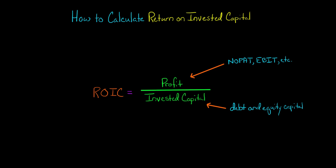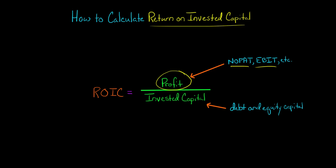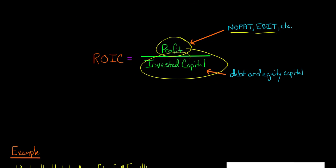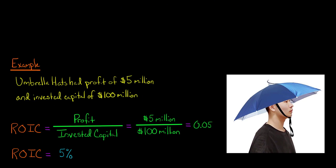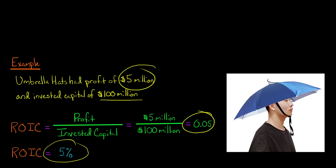In this video I'm going to show you how to calculate a company's return on invested capital. There are actually several different ways to calculate return on invested capital, but each way is a variation of this basic formula: you take some measure of the company's profit — which could be NOPAT or earnings before interest and taxes — and divide it by the amount of invested capital. For example, let's say we have a company called Umbrella Hats with a profit of five million dollars and invested capital of one hundred million. We take the five million divided by one hundred million, which yields 0.05, or five percent.